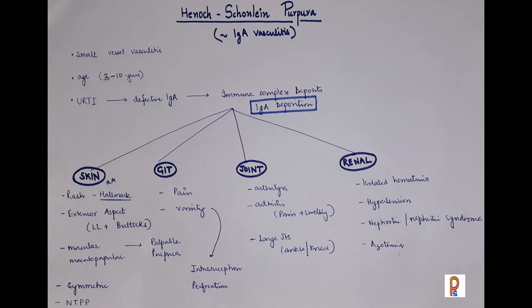When IgA deposition occurs in the skin, it leads to vasculitis. There is a rash which is the hallmark of Henoch-Schönlein Purpura. The rash is initially macular or maculopapular and later on turns into palpable purpura. This palpable purpura is due to vasculitis — it is non-thrombocytopenic purpura, not because of thrombocytopenia. It is usually symmetrical, affecting the lower limbs and buttocks on the extensor aspect.